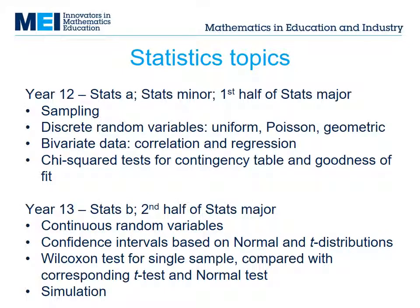Here are all the statistics topics for Further Maths. At A-level, the top half are the topics in a paper called Statistics A, and the bottom half are in Statistics B. At AS level, the top half make up a paper called Statistics Minor, and the whole list makes up Statistics Major.